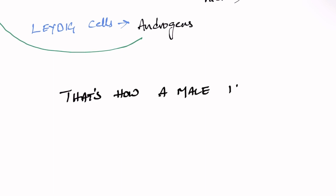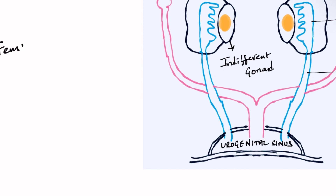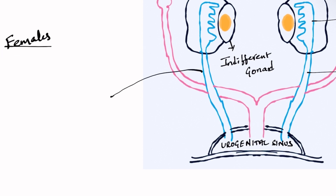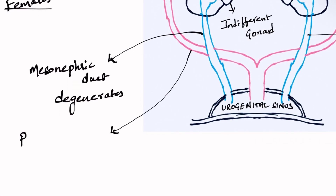Coming to females, it is very simple. In females, there is no Y chromosome, no SRY gene, and no testis-determining factor. So simply, the indifferent gonad turns into ovaries, the mesonephric duct degenerates, and the paramesonephric duct proliferates into female genital structures.